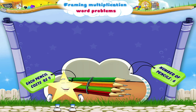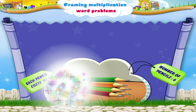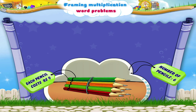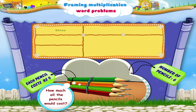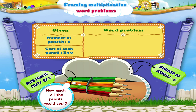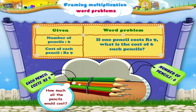Aren't these pencils colourful, Starry? Would you be able to tell how much all the pencils would cost? The given information is: the number of pencils is 6, and the cost of each pencil is rupees 9. The word problem will be as follows: If one pencil costs rupees 9, what is the cost of 6 such pencils?